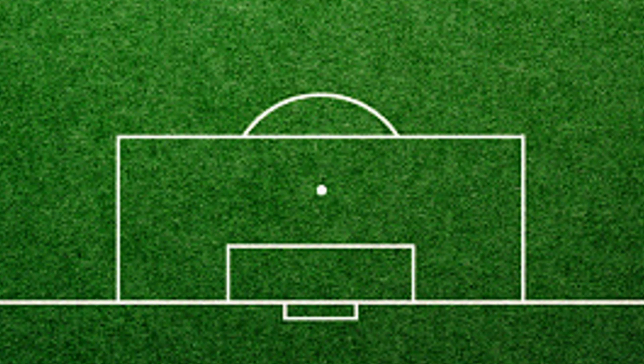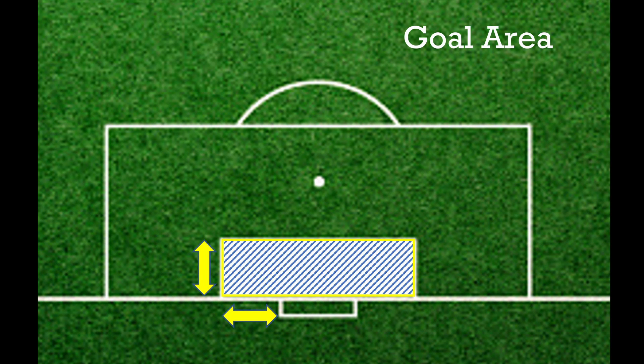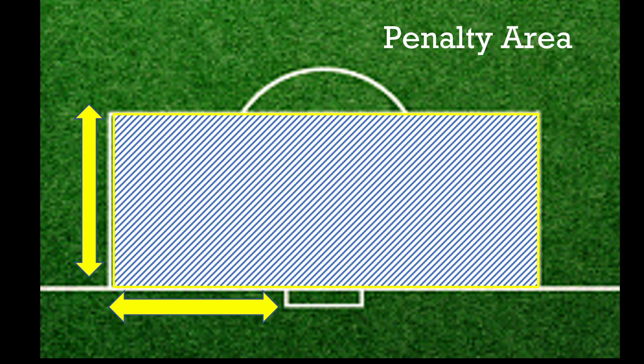A goal is scored when the ball crosses the goal line between the goal posts and beneath the crossbar. Two rectangular boxes are marked out on the pitch in front of each goal. The goal area, also known as the six-yard box, consists of the rectangle formed by the goal line and two lines starting on the goal line 5.5 meters from the goal post, extending 5.5 meters into the pitch.